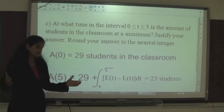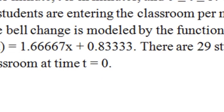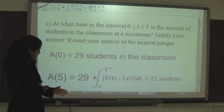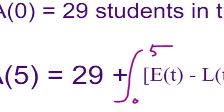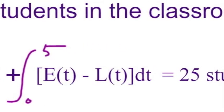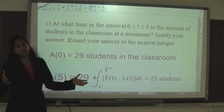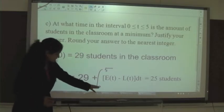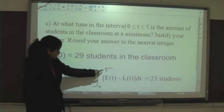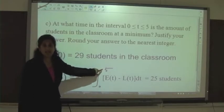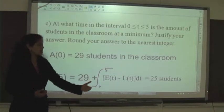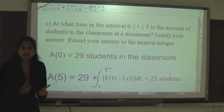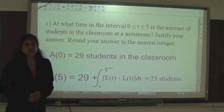So I have 29 students I started with and then the change — people entering minus people exiting. First I evaluate my endpoints. A sub zero was given: 29 students in my third period class. Then the other endpoint after five minutes: starting with 29 plus the anti-derivative from zero to five of E of T minus L of T gives me 25 students. We know this is correct because I told you there are 25 students in my fourth period class.